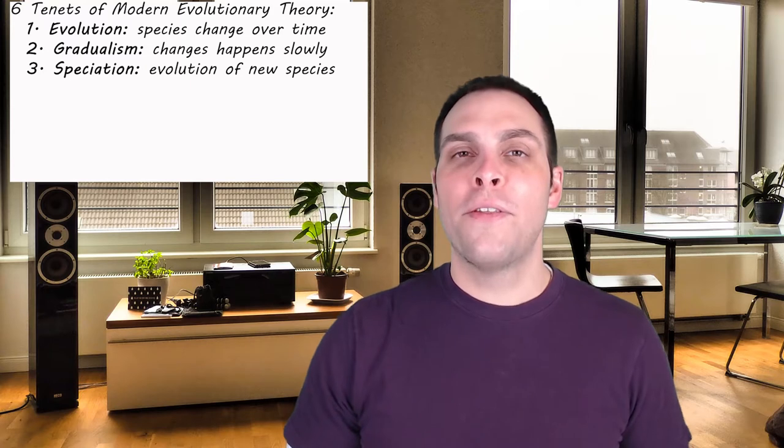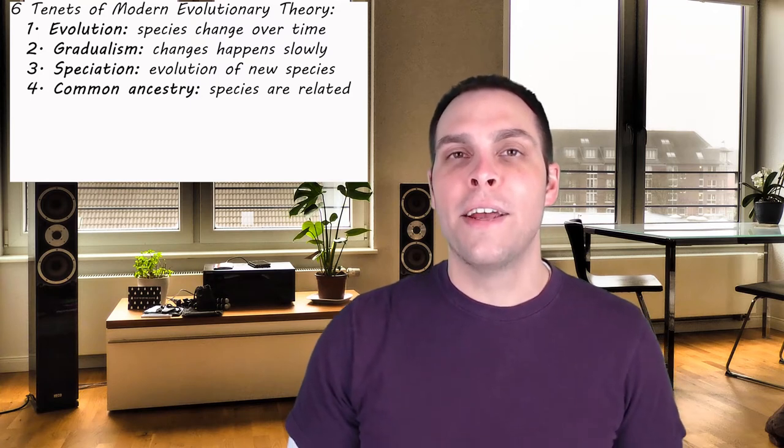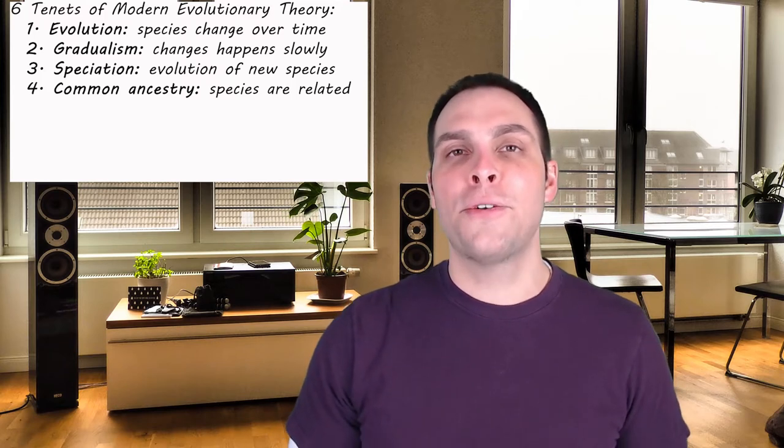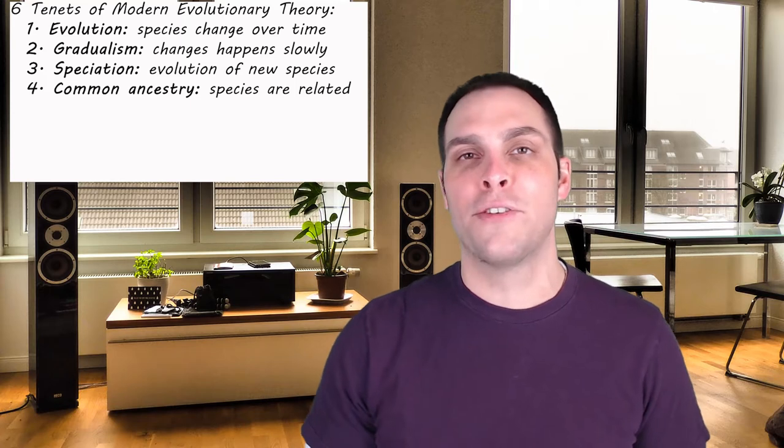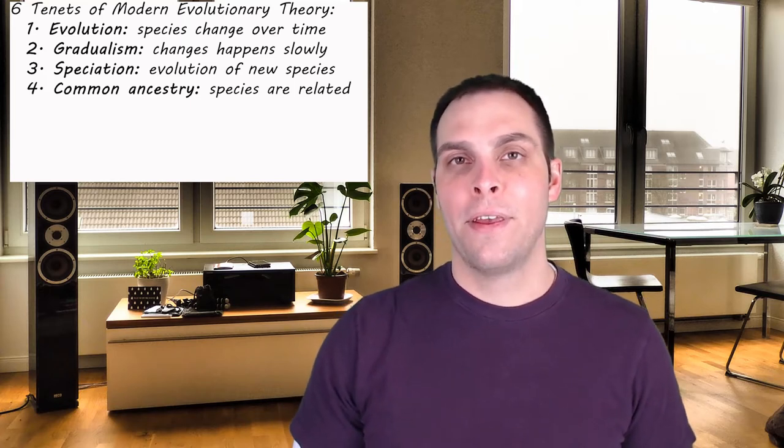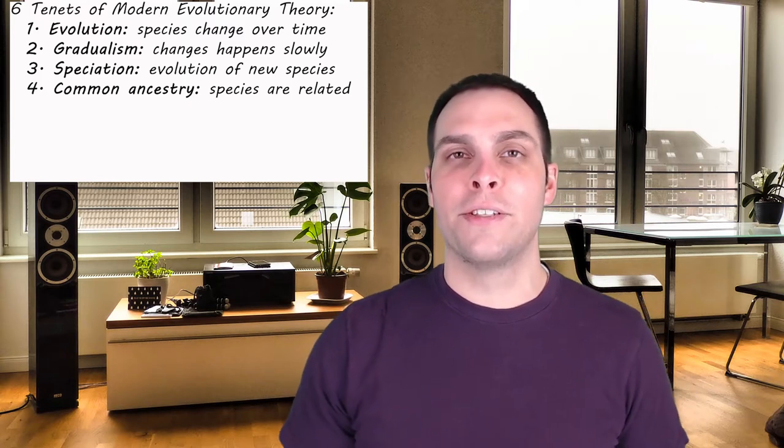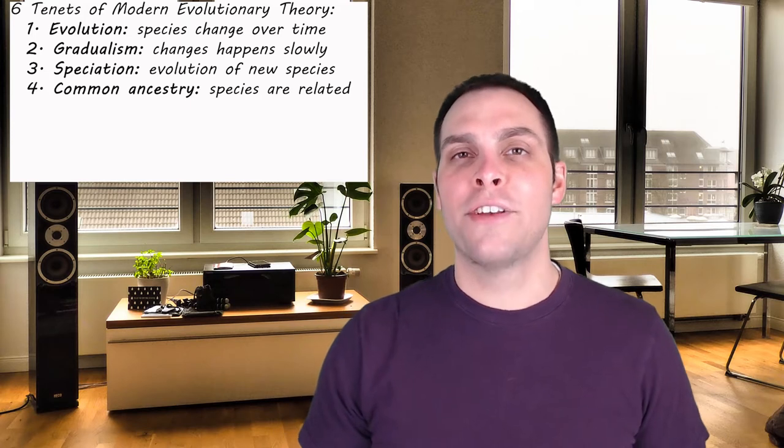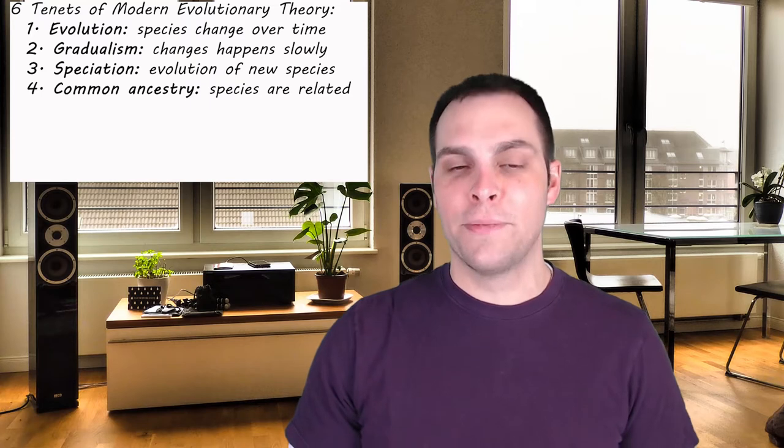They all diverge from a single species that lived about 3.5 billion years ago. And as a result we get to the fourth key tenet of modern evolutionary theory, common ancestry. Everything alive on this planet is related through a long series of ancestors to everything else. We can all trace our ancestry back to that single species that lived 3.5 or so billion years ago. Some species we are more closely related to and some we are more distantly related to.